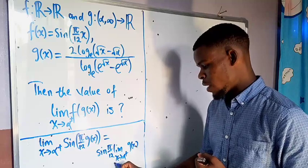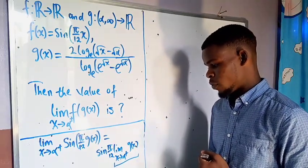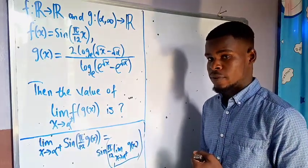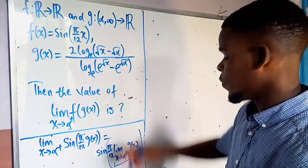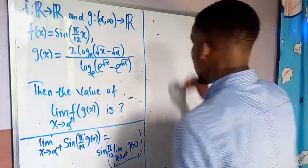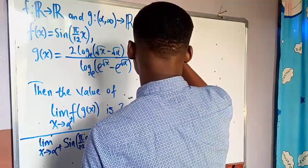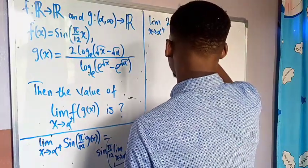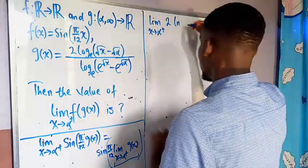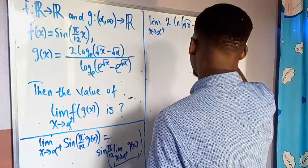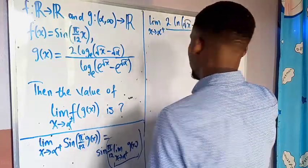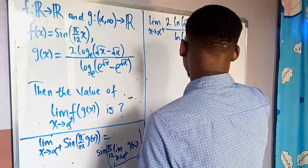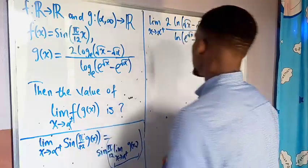We need to first evaluate the limit of g(x) as x tends to alpha from the right. So g(x) gives us 2 times the natural logarithm of the square root of x minus the square root of alpha, divided by the natural log of e to the power of the square root of x minus e to the power of the square root of alpha.